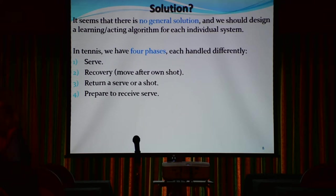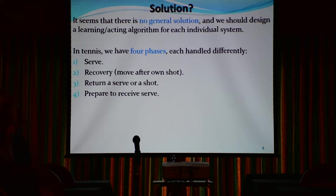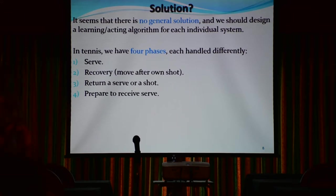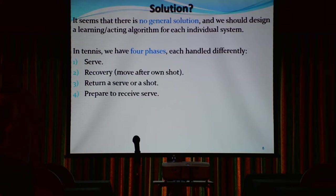The solution — and that's exactly the point — is that I don't understand how this problem should be solved in the general case. It's one of the reasons why machine learning AI has not yet won in the field of computer games and real-time systems. What I can tell you is what we do in tennis: we simply do manual analysis. We have four different phases that we identify ourselves: serving, recovery — that's the move after a shot — return of serve, and waiting — when you prepare and wait for the opponent to serve. We handle these four cases separately and independently.